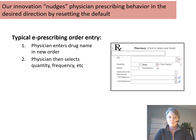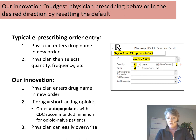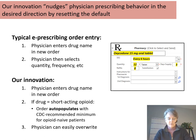Prior to our change, the e-prescribing order entry was the same as for any other prescription — the physician types in the drug name or chooses it from a pick list, and then selects or types in the SIG and all of the details. With our innovation, as soon as the prescriber enters the drug name and the system recognizes it as a short-acting opioid used in acute pain, the order auto-populates with the minimum dose recommended by the CDC for opioid-naive patients. So as soon as you type in oxycodone, it auto-completes with the CDC recommended minimum of three days supply. There is no hard stop and no justification required — if the prescriber disagrees, they just put their cursor in that field and type something else. It is a very gentle intervention.